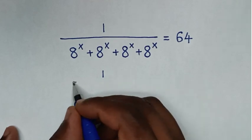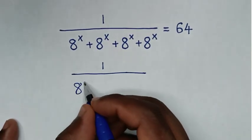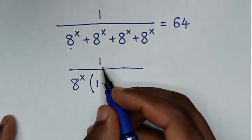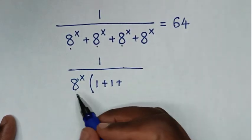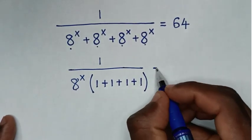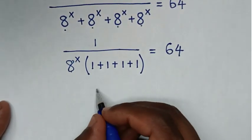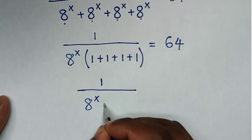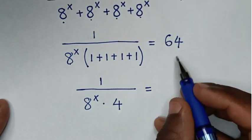In the denominator, 8 to the power of x is common, so we take 8^x outside the bracket. That gives 1 over 8^x times (1 + 1 + 1 + 1), which simplifies to 1 over 8^x times 4, and this equals 64.